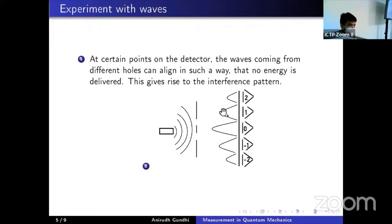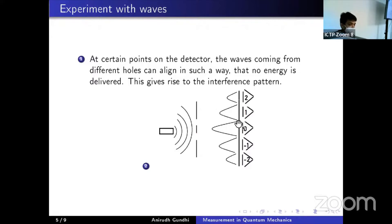To recap: with waves we see this interference pattern on the screen. In the previous experiment with bullets, we just had a local peak in the middle and the number of bullets gradually declined further away, with no points of zero bullets — unlike the wave pattern. This is a special characteristic of waves: the bullet counts from the bottom hole can only add to those from the top hole, they cannot subtract. Waves, however, can have destructive interference.